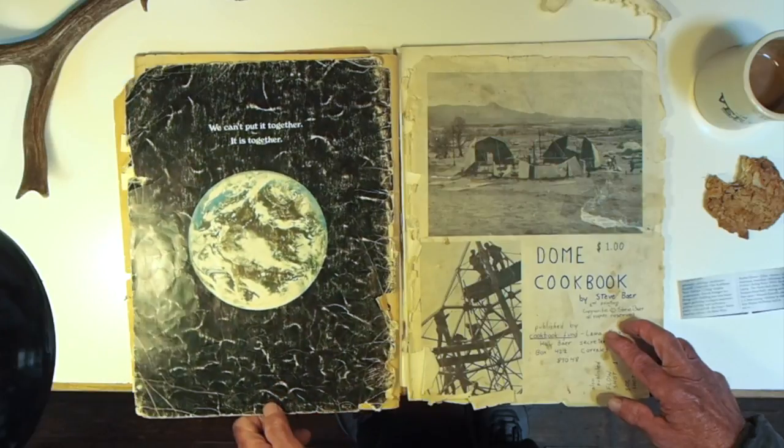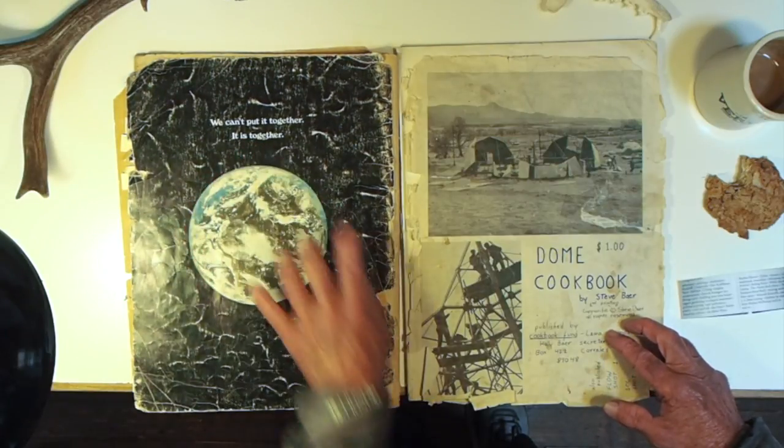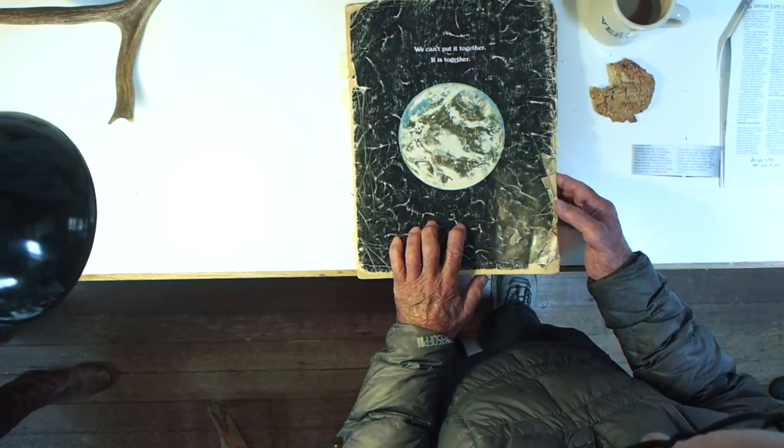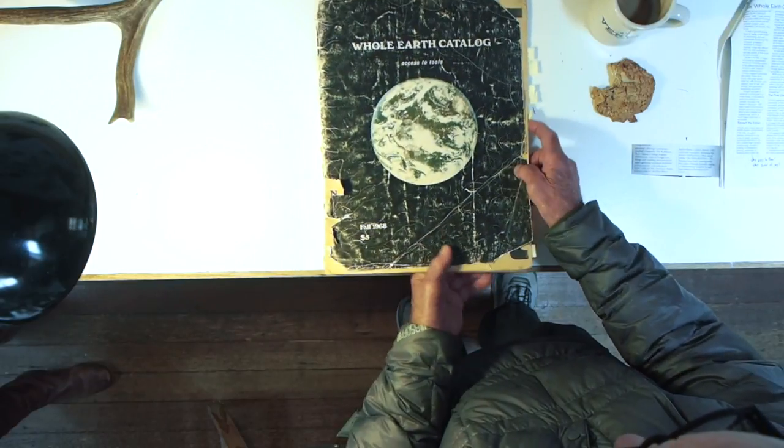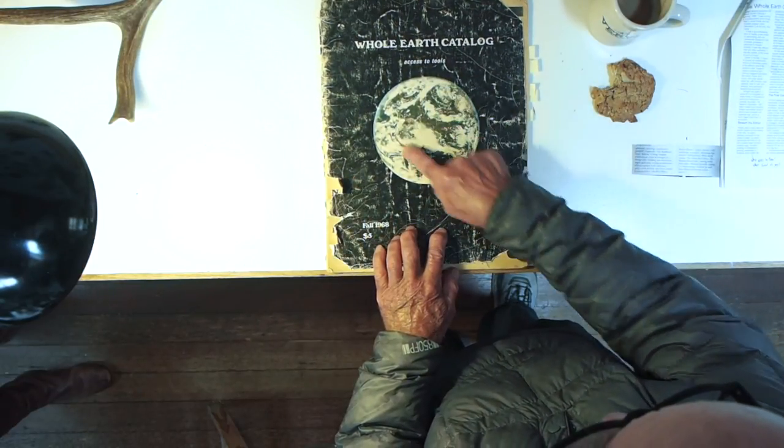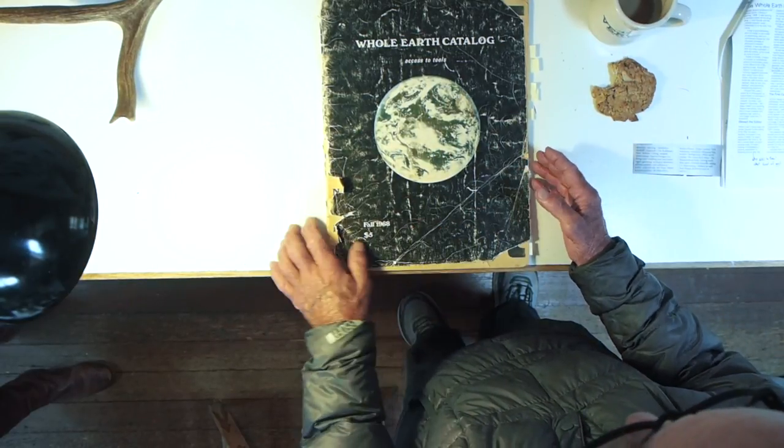Everybody loved this. He concluded by saying we can't put it together. It is together. And what this is here, this is the first view of the Earth from space. That was the big deal about the Whole Earth Catalog. It was the first time we saw the Earth from space where we saw this shimmering blue planet and got the idea of how fragile it was.